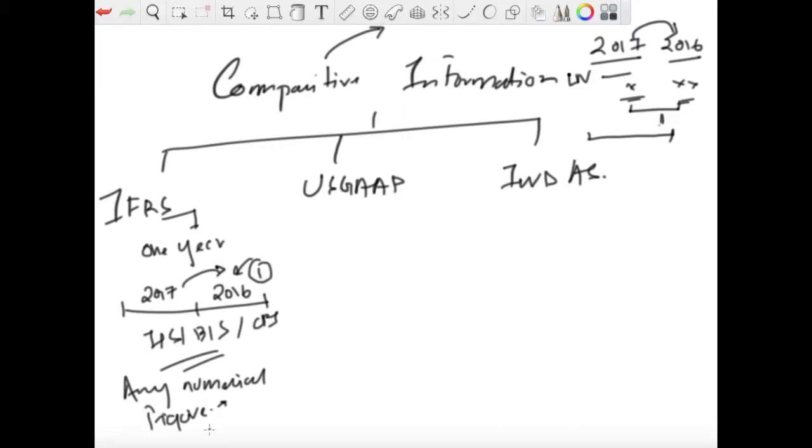However, a third statement of financial position at the beginning of the preceding period is required, which means we need to prepare at least three statements of financial position in a situation where the entity has adopted IFRS for the first time or there has been a retrospective change in the accounting policy or any kind of reclassification has been done which has material effect for the financial statement at the beginning of the period.